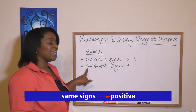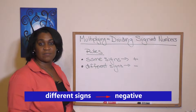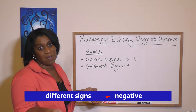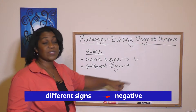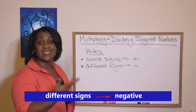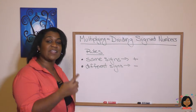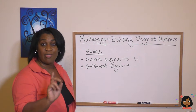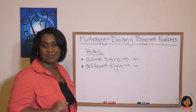But if the signs are different — negative three times a positive five — our answer is always going to be negative. So in that case we'd have a negative 15. Those are the rules. Let's apply them.